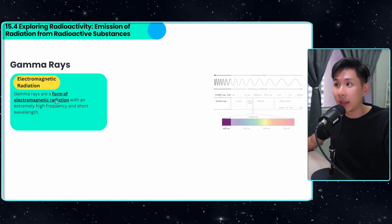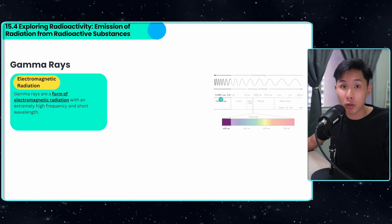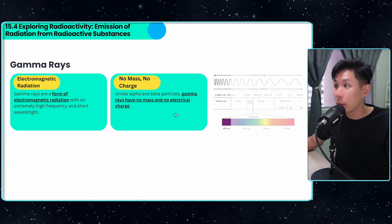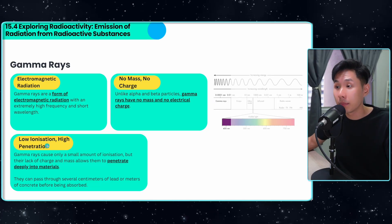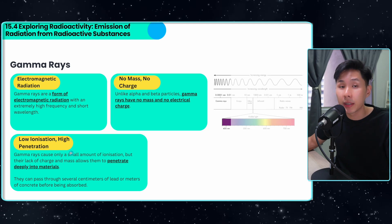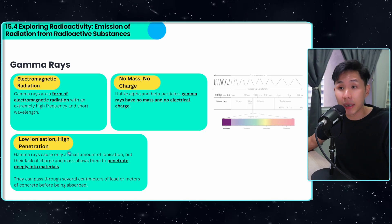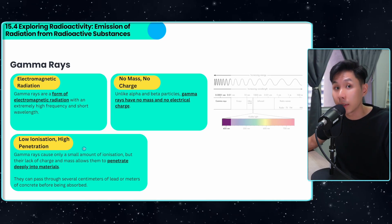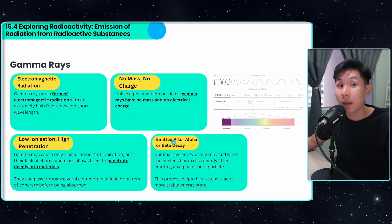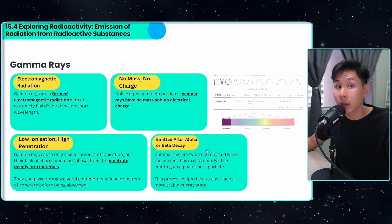Gamma rays are a form of electromagnetic radiation at the end of the electromagnetic spectrum. They have no mass and no electrical charge. They have low ionization but high penetration. Because they are so quick, they penetrate quickly. That's why they can't ionize as effectively as alpha and beta particles, also because they have no charge. They are emitted after alpha and beta decay. After that emission, the nucleus will become a more stable atom.